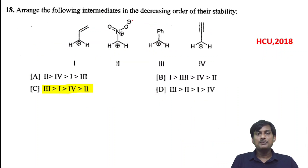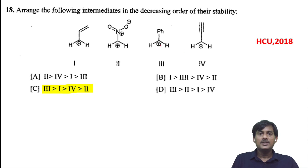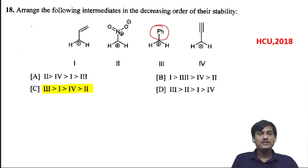Arrange the following intermediates in decreasing order of stability. This question was already asked in 2019. The first intermediate is more stable due to delocalization of electrons — there are 3 pi electrons in the phenyl ring. The next one is more stable due to delocalization of pi electrons.